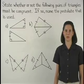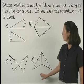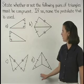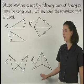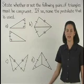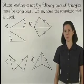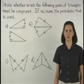In this example, we're asked to state whether or not the following pairs of triangles must be congruent, and if so, name the postulate that is used.